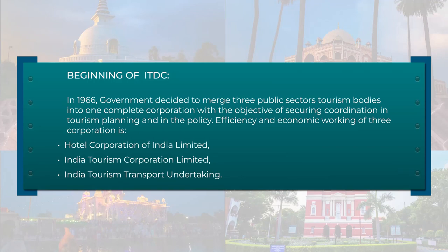In 1966, the government decided to merge three public sector entities into a single tourism body to make one complete corporation with the objective of securing coordination in tourism planning and policy. The three corporations were: Hotel Corporations of India Limited, India Tourism Corporation Limited, and India Tourism Transport Undertaking. The Ministry of Tourism is the nodal agency for formulation of national policies and coordination of activities of various central government agencies, state governments, union territories, and the private sector.